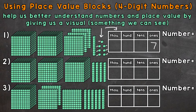Let's move to this stack of blocks right here, which is a stack of 10 blocks. So we have one group of 10, which has a value of 10, and we can represent that by putting a one in the tens place — one stack of 10, which has a value of 10.